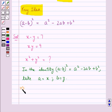So we get x minus y whole square is equal to x square minus 2xy plus y square.